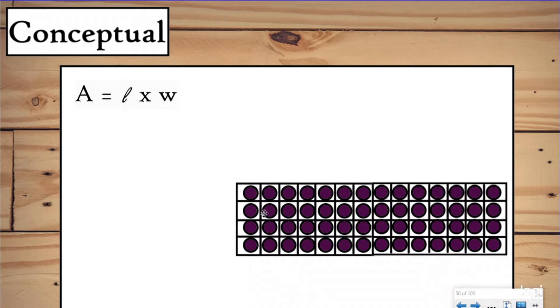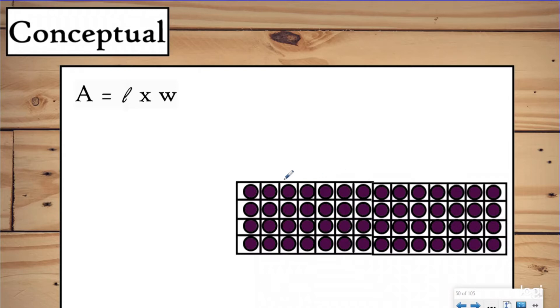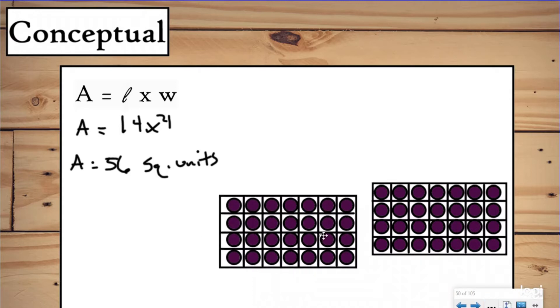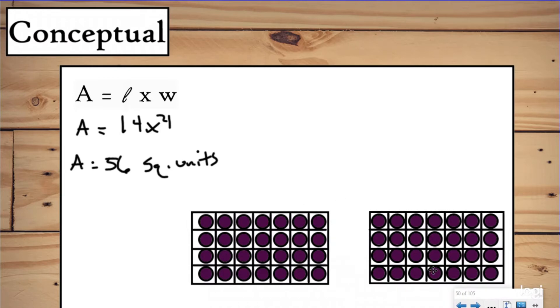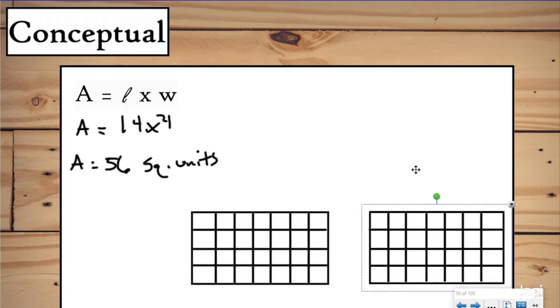Here we have the exact same array. Now again, when we do rectangles, instead of saying that we have columns, we say length and width, we use our dimensions. So here for this whole rectangle, I have a length of 14 units, and my width is four units. So if I were to find the area of this, I would do area equals 14 groups of four. And I would say the area of this rectangle is 56 square units. Now if I want to use my distributive property knowledge to make this easier to give it a different look, I can split my array or my rectangle into separate equal groups.